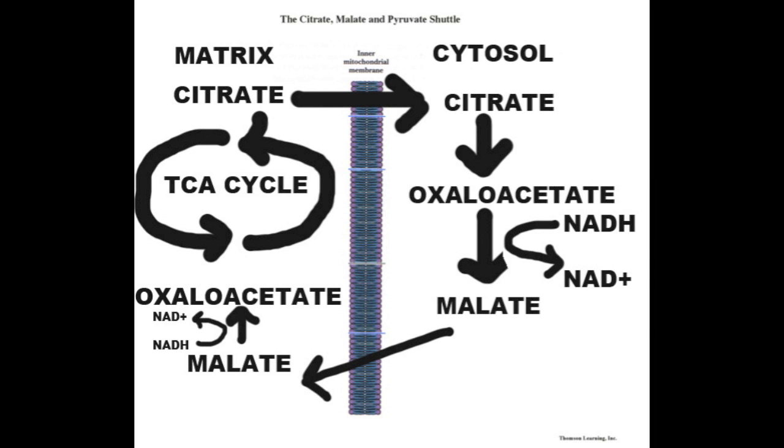Malate is then transported back into the mitochondrial matrix. Malate is reduced back into oxaloacetate as NADH is oxidized back to NAD+, and oxaloacetate feeds back into the TCA cycle. That's the complete citrate-malate shuttle.